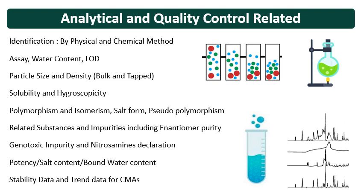Then related substances and impurities including enantiomer purity, also known as chiral purity. Genotoxic impurity and nitrosamine declaration are also important — nowadays nitrosamine declaration is very, very important. The supplier has to provide the nitrosamine declaration and also the declaration and risk assessment for reducing nitrosamines, because nitrosamines are genotoxic impurities and are carcinogenic in nature and are required to be controlled in the API itself.